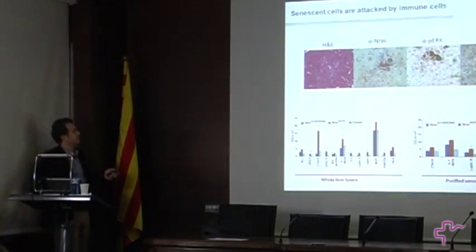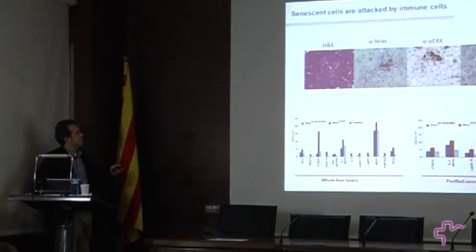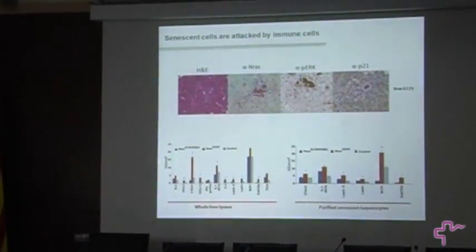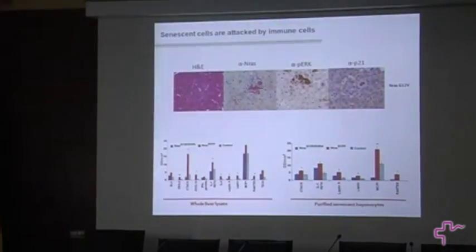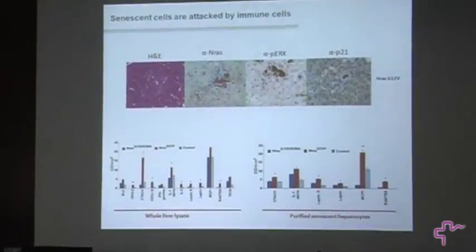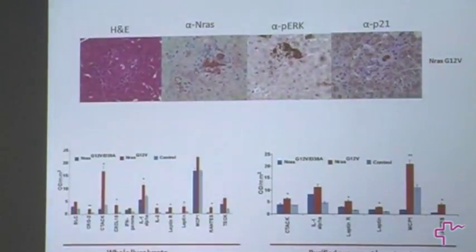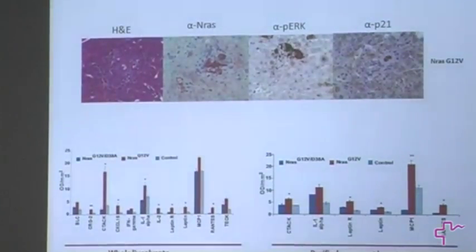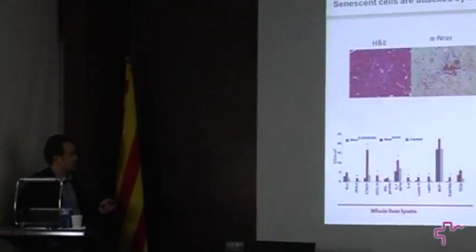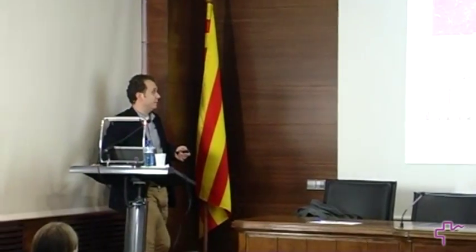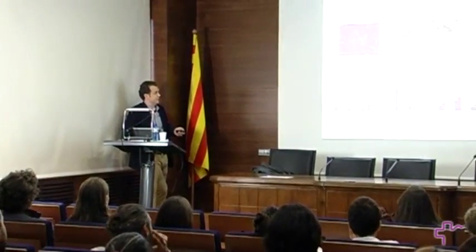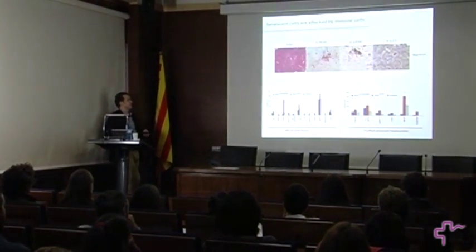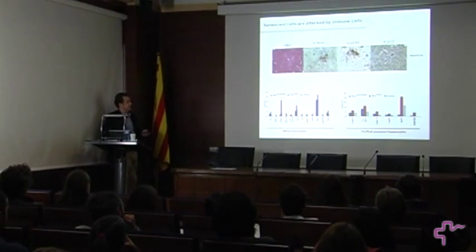When we looked at these livers, it was striking to see that many hepatocytes changed morphology, showing senescence-typical appearance and staining positive for senescence markers. Most prominently, these cells were surrounded by a ring of immune cells, suggesting that precancerous hepatocytes are subject to an immune attack. We analyzed whole liver lysates and purified senescent hepatocytes and found known and unknown factors secreted from these senescent hepatocytes — including MCP1, which I will return to later.